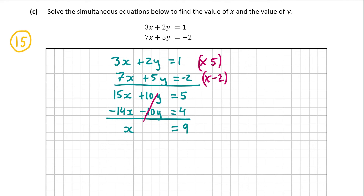So therefore, we get x equal to 9. Remember, in simultaneous equations, you're doing the sums down the way. That's where I had 15x minus 14x, which was x, and 5 plus 4, which is 9. Both y's cancelled. But now that we know x is equal to 9, it's going to be easy to work out the value for y. We can pick either of the equations at the start — either 3x plus 2y is equal to 1, or 7x plus 5y is equal to minus 2 — and we're going to pop in 9 for x and then solve for y.